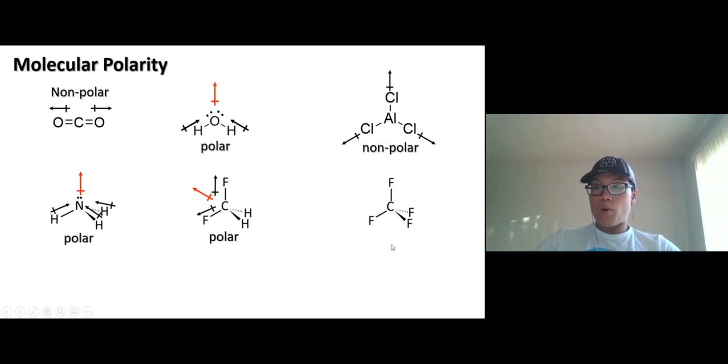Oh, one more, one more right here. So we have CF4. This one is tetrahedral, so the dipole moment of each bond point toward fluorine. They cancel each other out in the middle. This is a non-polar compound.